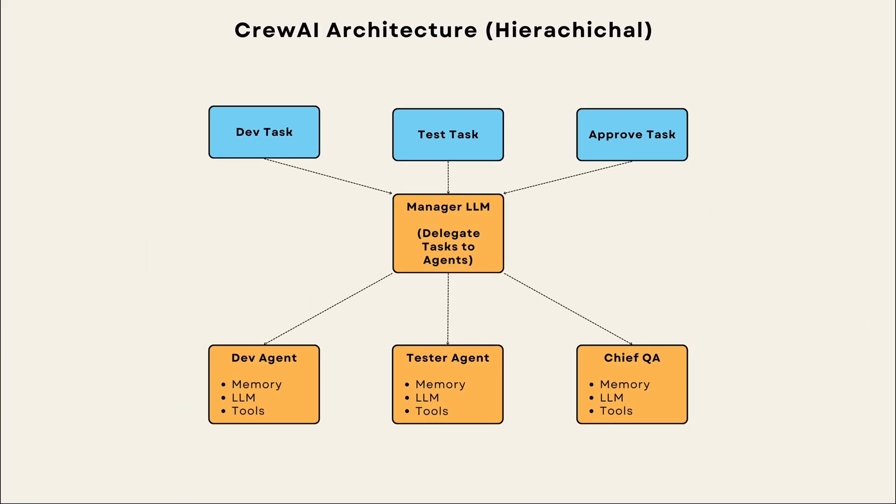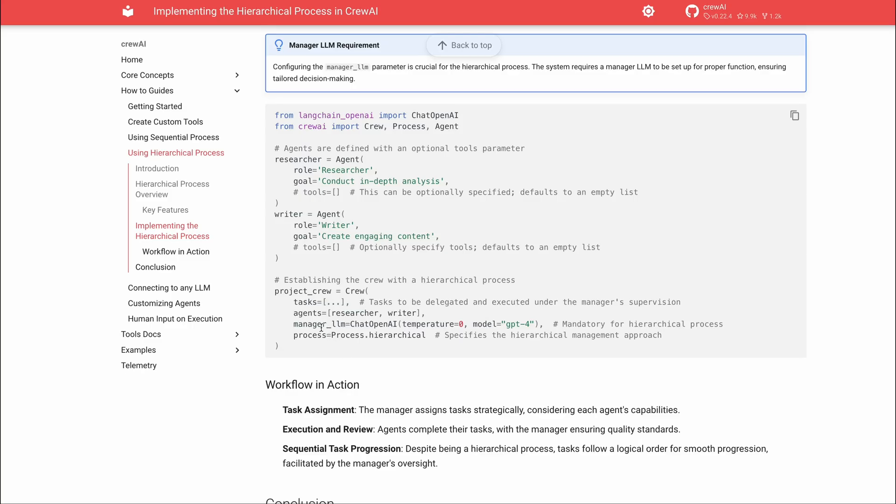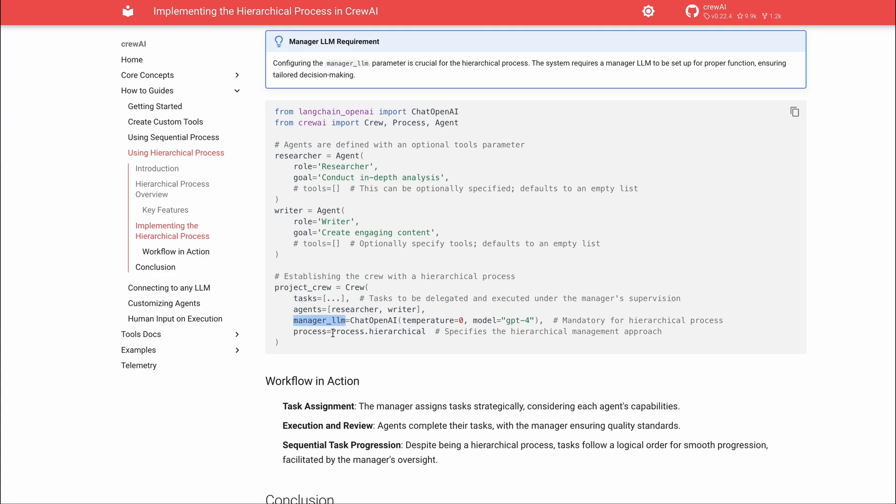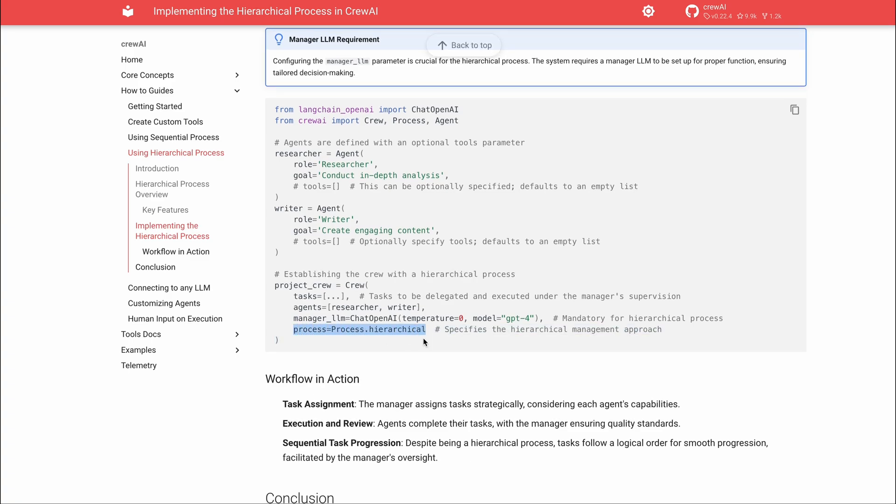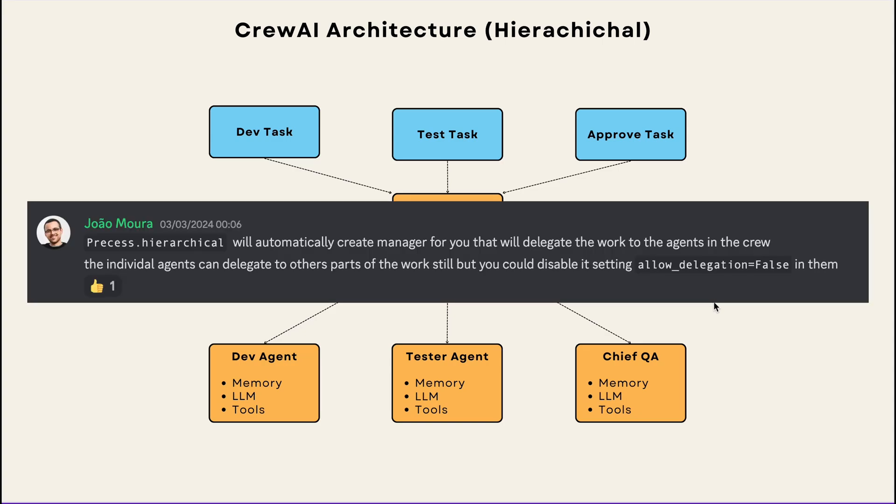The next and a bit more advanced architecture is the hierarchical process architecture, where you have a supervisor that's responsible for assigning tasks to agents. In order to enable the supervisor, you just have to pass another LLM config called manager_LLM and set the process to be hierarchical. For instance, in our game builder crew, the manager or the supervisor agent would oversee the workflow and would be responsible for assigning or delegating the task to the developer, tester and the chief QA agents. And the manager agent would also ensure that the tasks are handled in right order and the outcomes meet the required standards. One thing you have to remember is that individual agents can still delegate works to other agents if delegation is enabled.